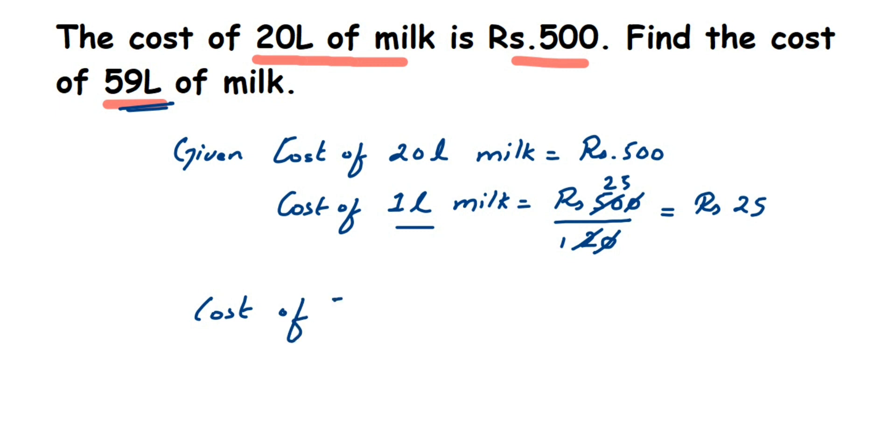Cost of 59 liters milk will be equal to rupees 25 multiplied by 59. So you can multiply 59 and 25, it will be equal to 1,475 rupees is the cost.